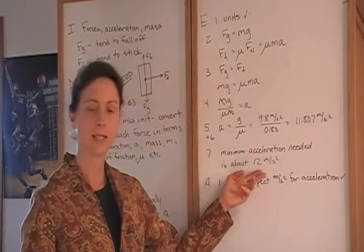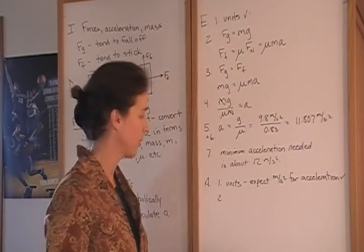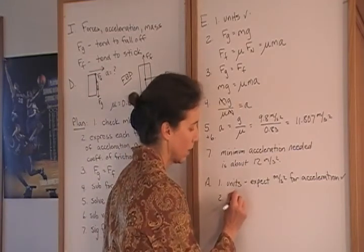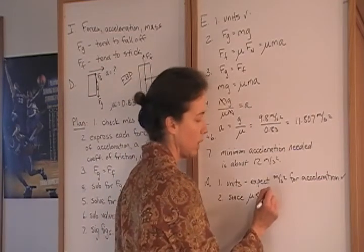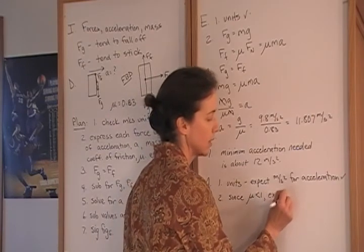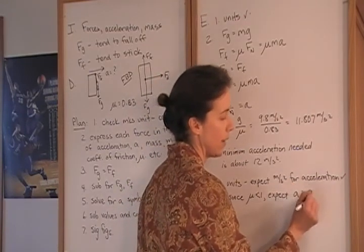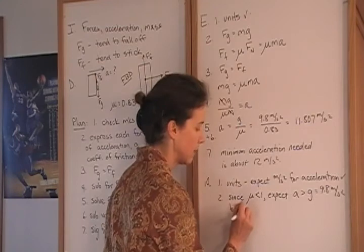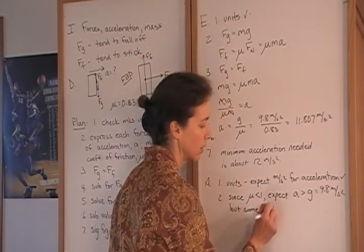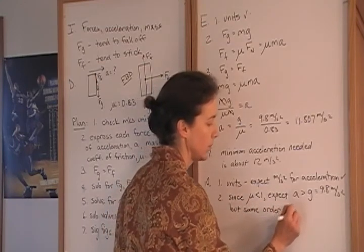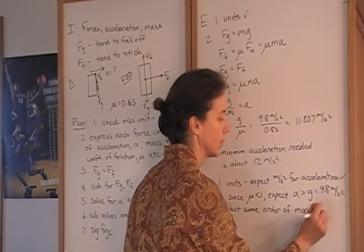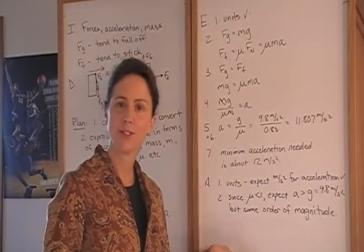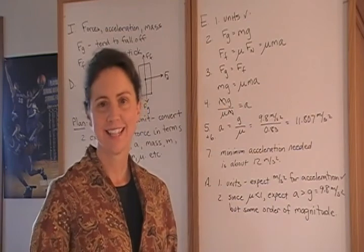In fact, we have our minimum acceleration as 12 meters per second squared. So how can we say this as we assess the problem? Well, since the coefficient of friction is less than one, we do expect a to be greater than the gravitational acceleration of 9.8 meters per second squared, but same order of magnitude. So considering our units and the order of magnitude that we expect our answer to be, we have confidence that this answer is probably correct.